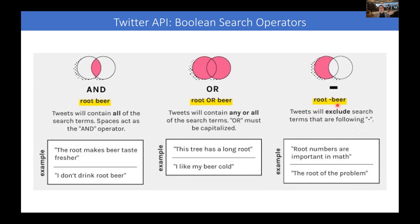In a search query, you can include minus and a keyword as a way to exclude messages that contain that particular word. Let's say we want all tweets that include the word 'root,' but none of them should include the word 'beer.' So we type 'root space minus beer.' Note that there's no space between minus and the word — minus has to be attached to the word. This query will generate tweets like 'root numbers, I am putting in math' — there's the keyword root — or 'the root of the problem,' which has 'root' and no 'beer,' just like we want.